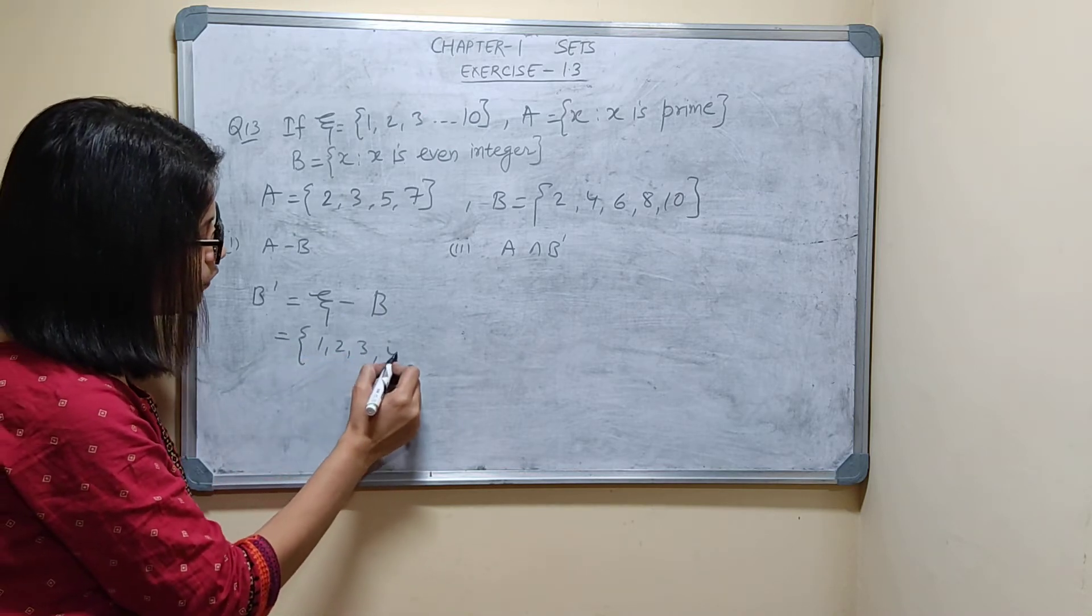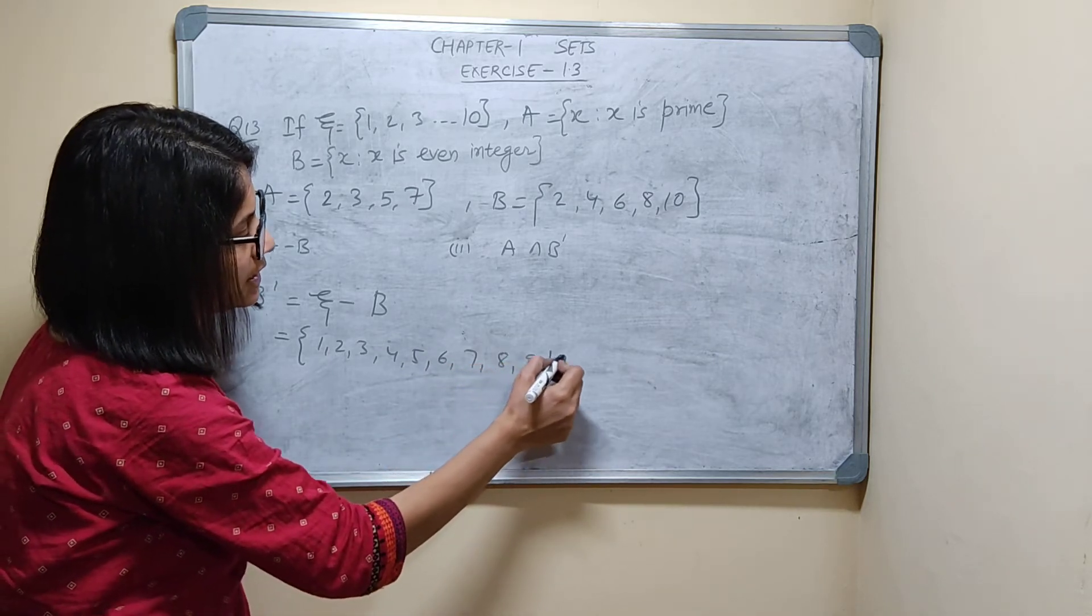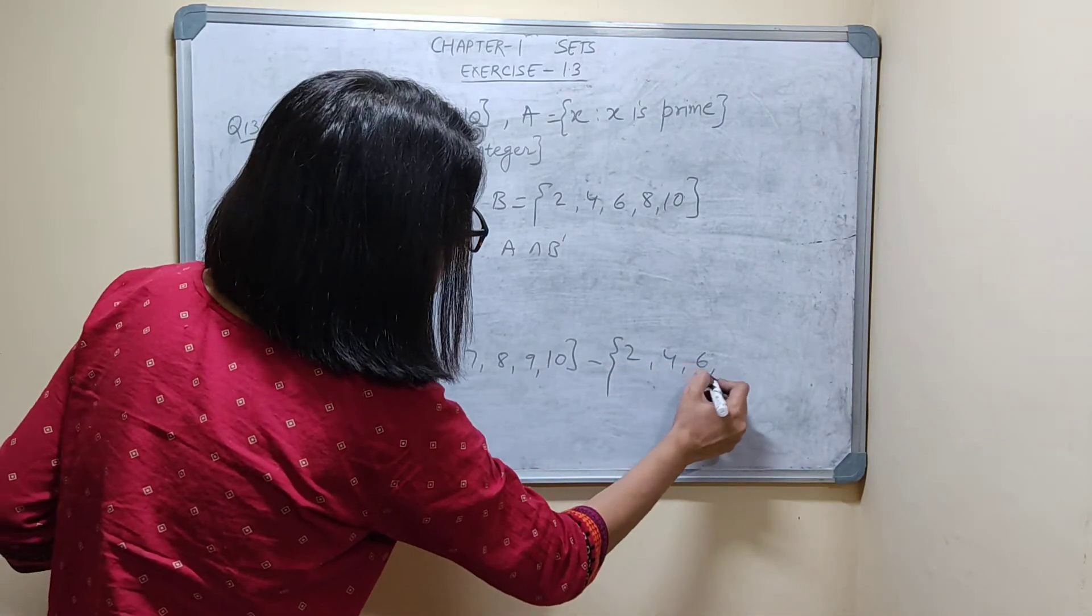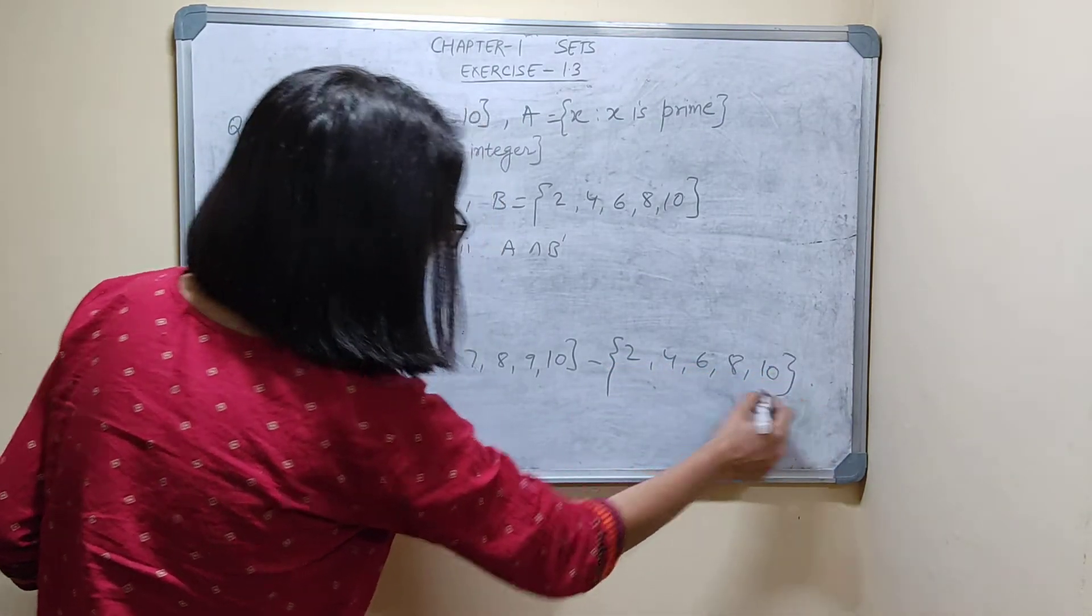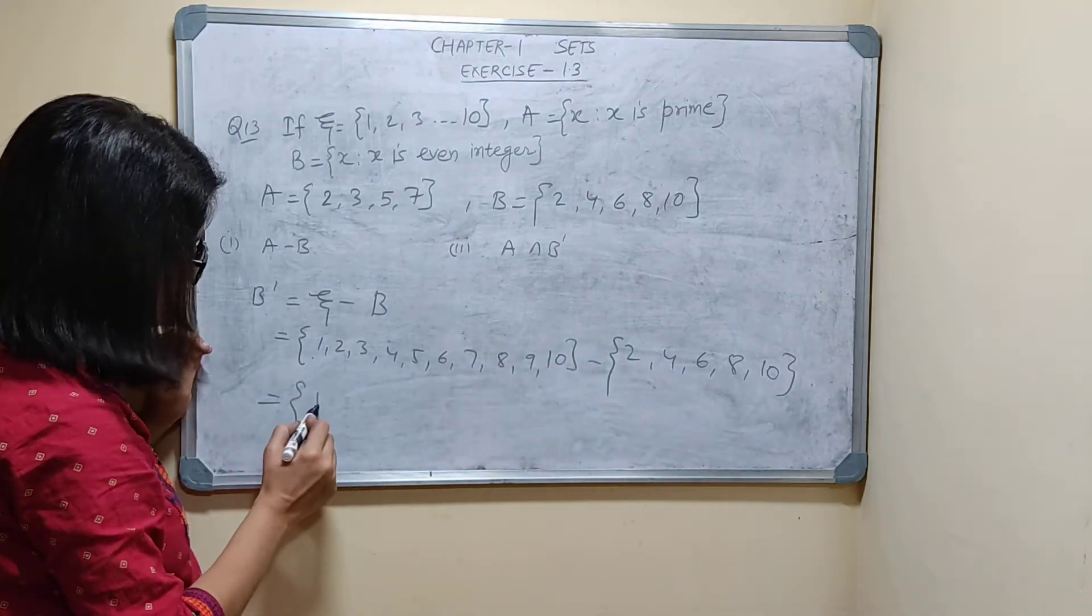1, 2, 3, 4, 5, 6, 7, 8, 9, and 10, minus B is what? 2, 4, 6, 8, and 10. So I will write: 1, it's here but it's not here, so I will write.